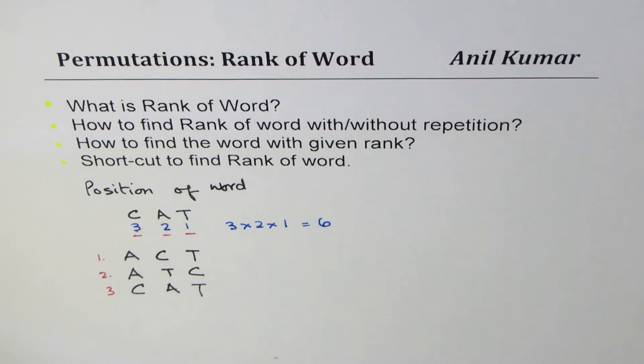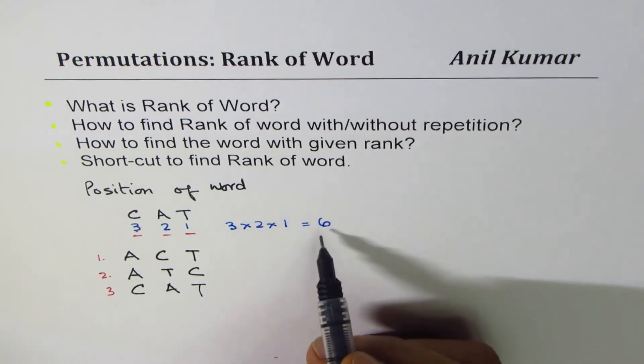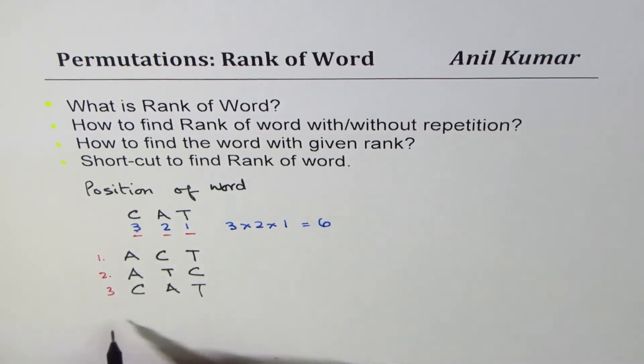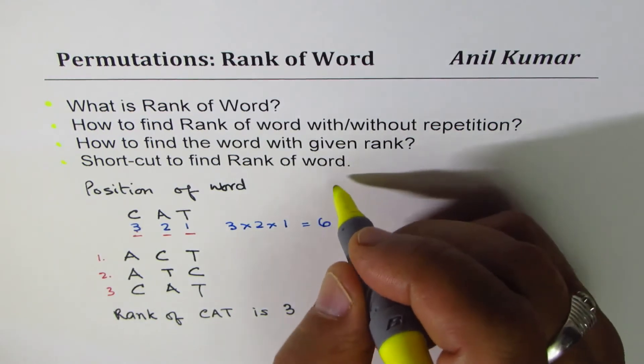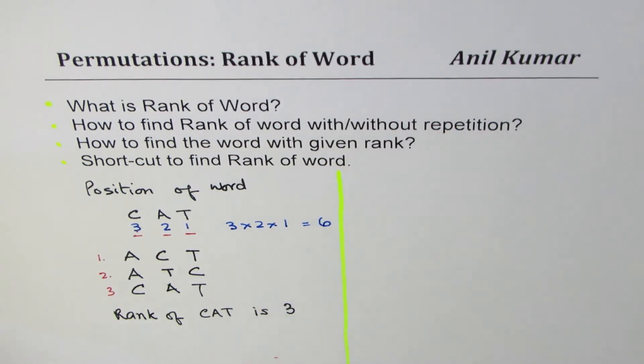So we say that the rank of CAT is three, since it appears in third position amongst this list of six. We are not really concerned how many, but where it appears. So we say rank of CAT is three. That is how we have figured out rank of a word.